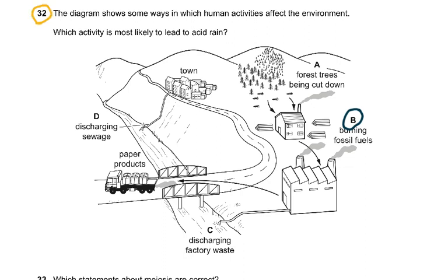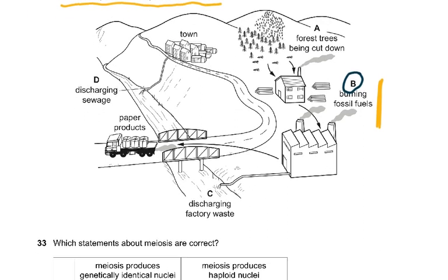Question 32 asks which human activity is most likely to lead to acid rain. The answer is burning fossil fuels, because this produces oxides of nitrogen and sulfur dioxide, which dissolve in water forming nitric acid and sulfuric acid, resulting in acid rain. The other options — discharging factory waste, deforestation, and discharging sewage — were wrong. Discharging sewage would lead to eutrophication, not acid rain.